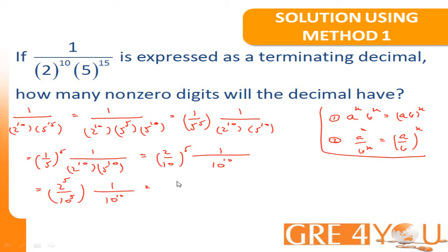This is equal to 2 to the power 5 is equal to 32 divided by 10 to the power 5 times 10 to the power 10 is equal to 10 to the power 15. So, now, we have a 32 divided by 10 to the power 15 and this is equivalent to 0.000 and so on, a whole number of zeros followed by 32.